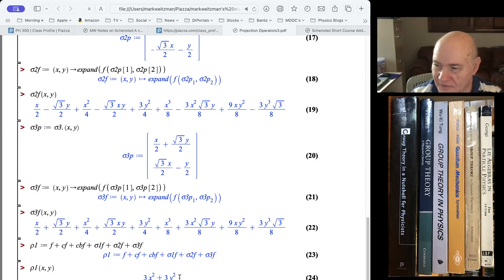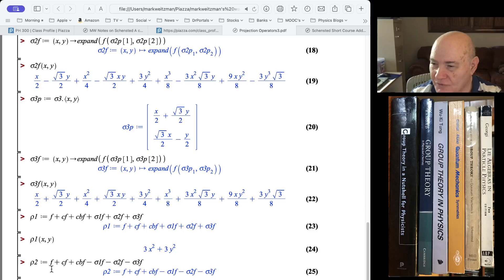Now, the projection operators. Row 1 is just, we use the one-dimensional representation, which is just all ones. So it's just 1 times f plus cf plus cbf, sigma 1f, sigma 2f, sigma 3f.